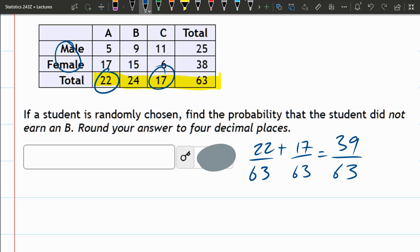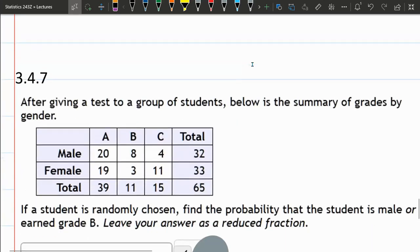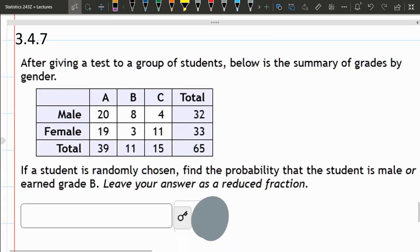And they do want decimal answer here, so you should convert it to a decimal. And we're going to do the next question as well, which is similar, but a little bit different. Very similar chart. A student is randomly chosen. Find the probability a student is either male or earned a B.